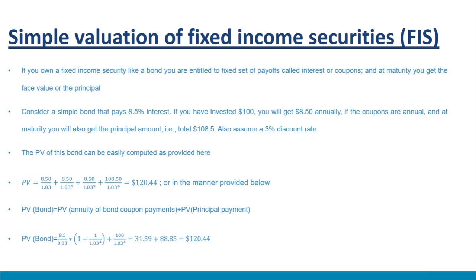If you own a fixed income security like a bond, you are entitled to a fixed set of payoffs called interest or coupons. These payments continue until the security matures. At maturity, you get the face value or principal of that fixed income security. Consider a simple bond that pays 8.5 percent interest. If you have invested $100, you will get $8.5 annually, and at maturity you will also get the principal — a total of $108.5.